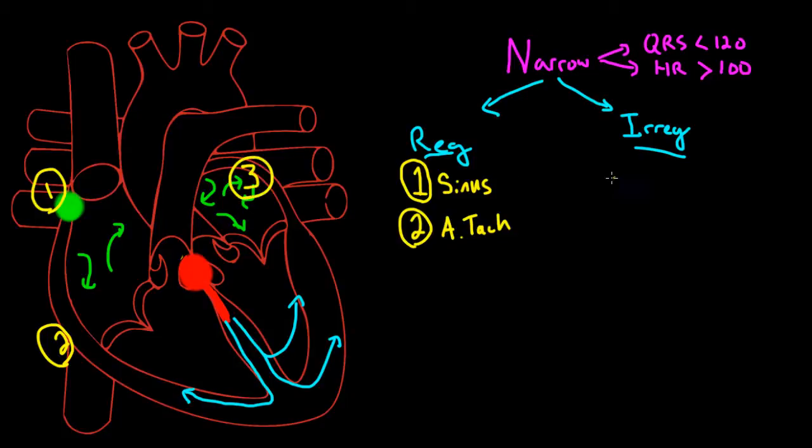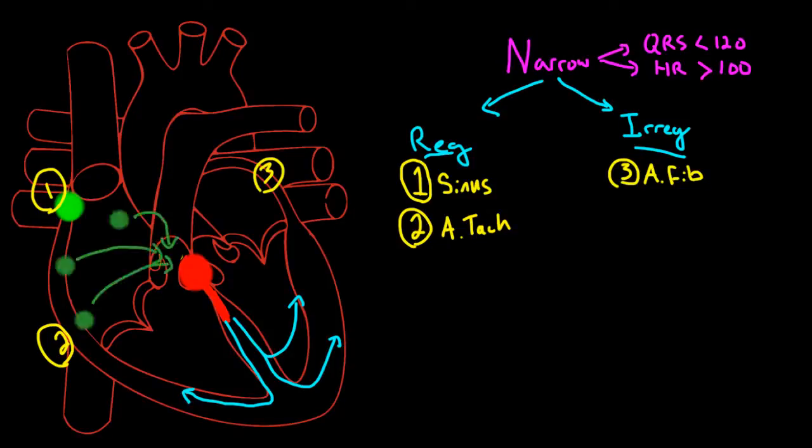Atrial fibrillation is an irregular narrow complex tachycardia. In AFib, the rhythm is completely irregular, and no P waves are seen. Multifocal atrial tachycardia is an irregular narrow complex tachycardia with at least three different kinds of P waves. It occurs because there are multiple irritable areas in the atrium that are causing ectopic beats at their own frequency. This is primarily associated with lung disease.